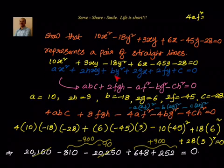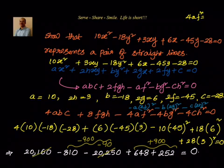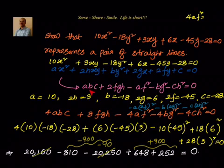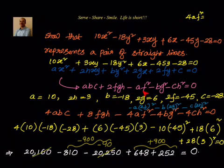So the key point to understand is: for a second degree general equation Ax² + 2hxy + By² + 2gx + 2fy + c = 0 to represent a pair of straight lines, the condition ABC + 2fgh − Af² − Bg² − Ch² = 0 must be satisfied. Find the values of A, B, C, g, f, h, substitute, and check if the result is 0. In the next session we will see the derivation of this condition. Thanks for your time and support — see you next session.